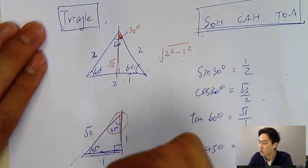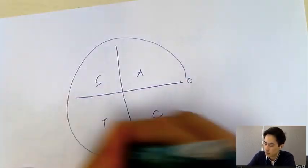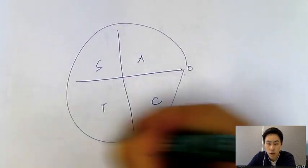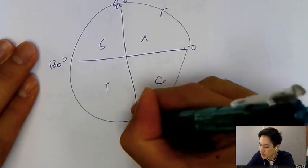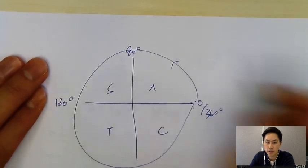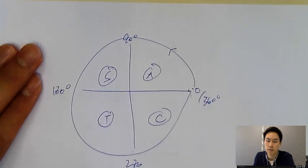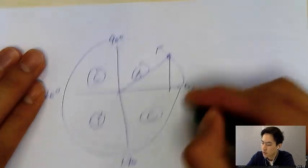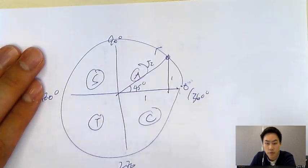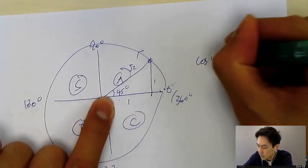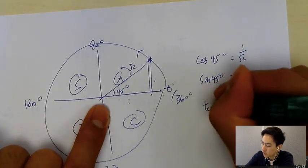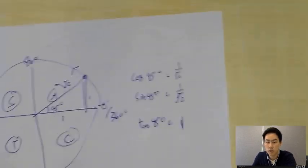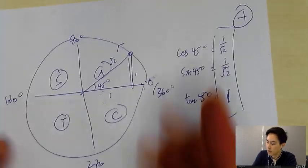Now for the CAST rule, which applies to circular trigonometry. Going anticlockwise: 0° to 90° is the first quadrant, 90° to 180° is the second, 180° to 270° is the third, and 270° to 360° is the fourth. 'A' stands for All positive; in the first quadrant, sine, cosine, and tangent are all positive. Using the 1-1-√2 triangle placed in the first quadrant, all values are positive.